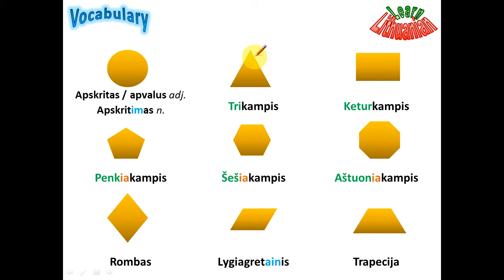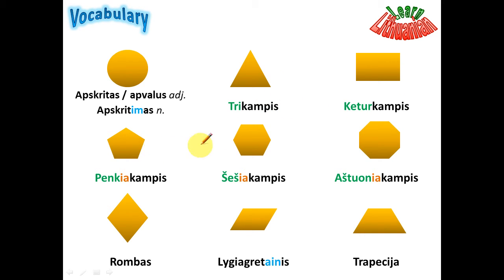But if you want to say the adjective — triangular, rectangular, and so on — you say: trikampis, ketuskampis, penkiakampis, šešiakampis, aštuoniakampis. But putting the stress is a rule that's often broken by speakers of the language. If you say trikampis for both the shape and the adjective, you'll be understood. So mostly you can say all these shapes the same way and you'll be understood.